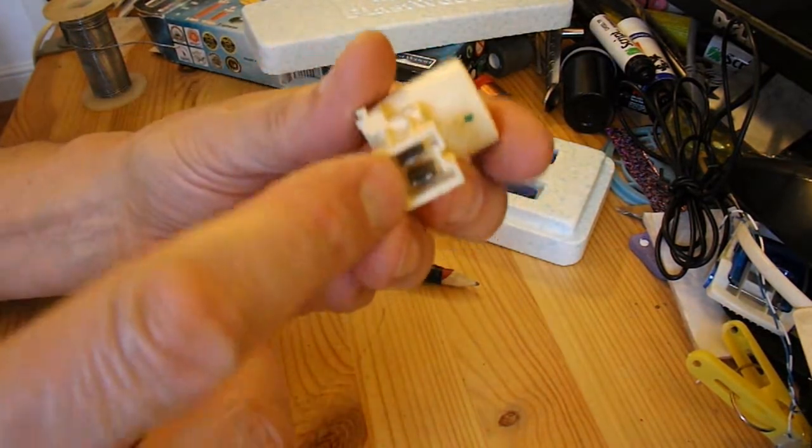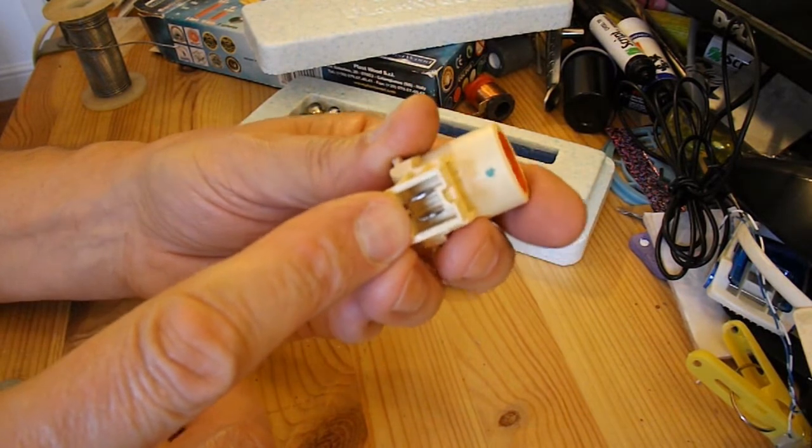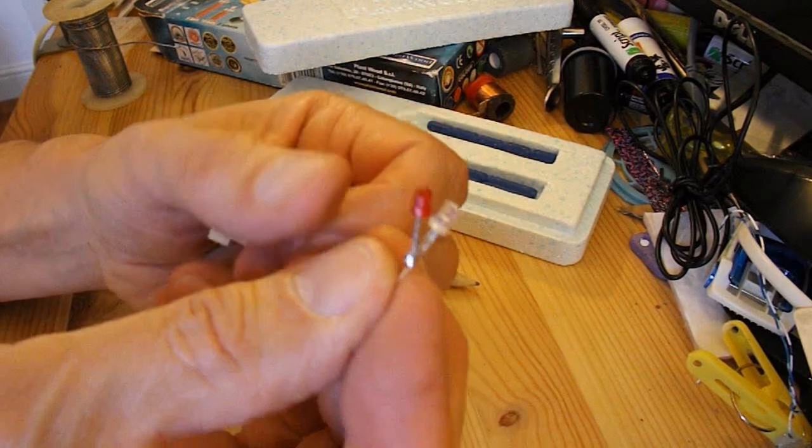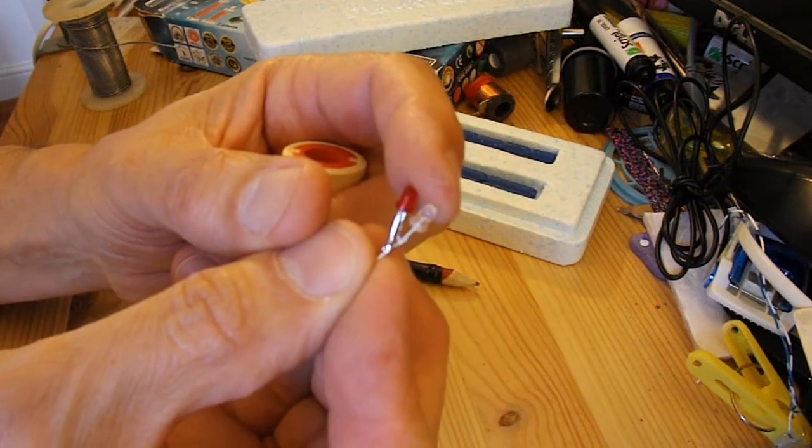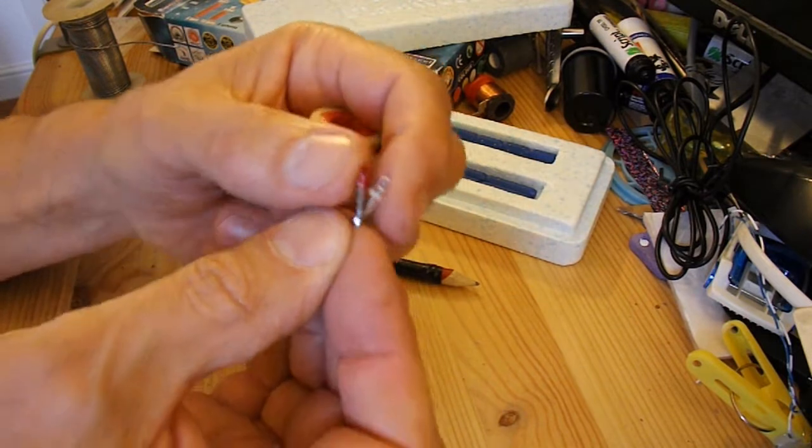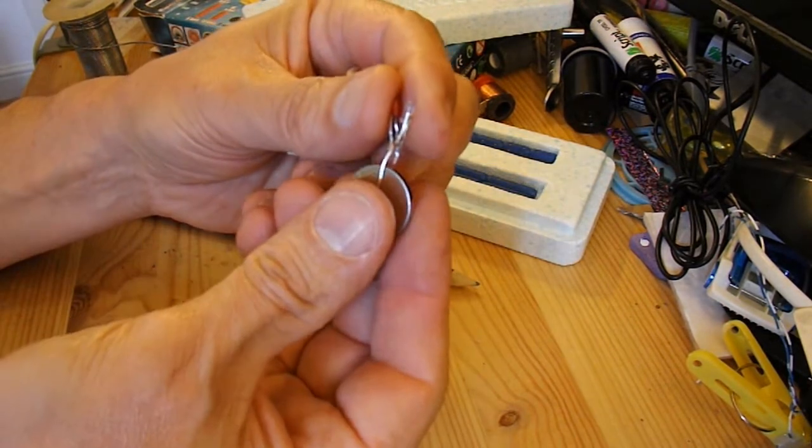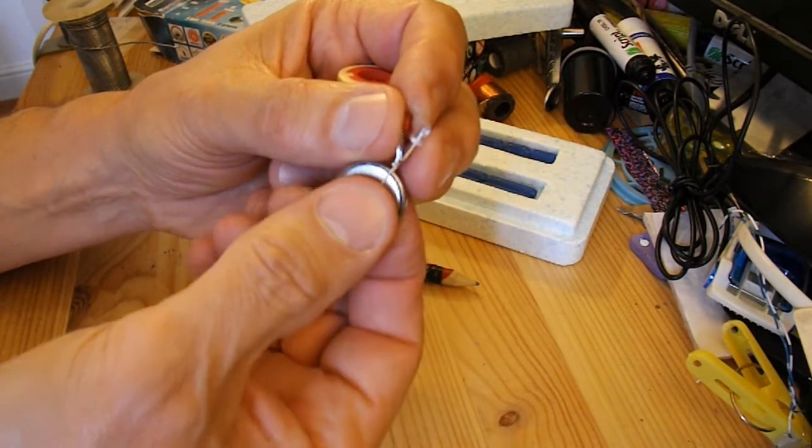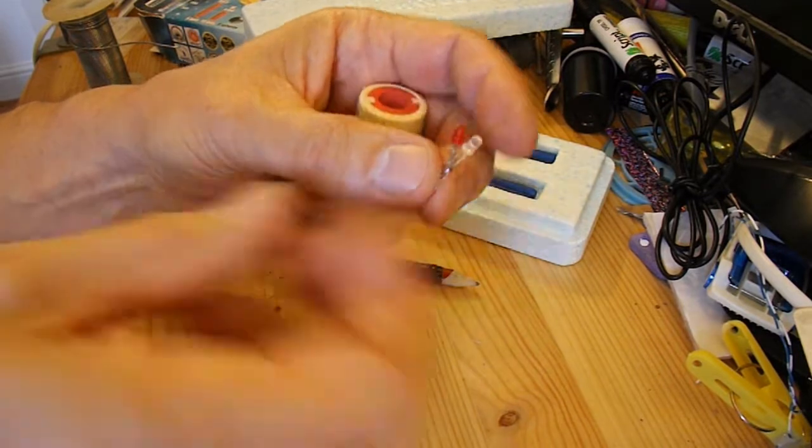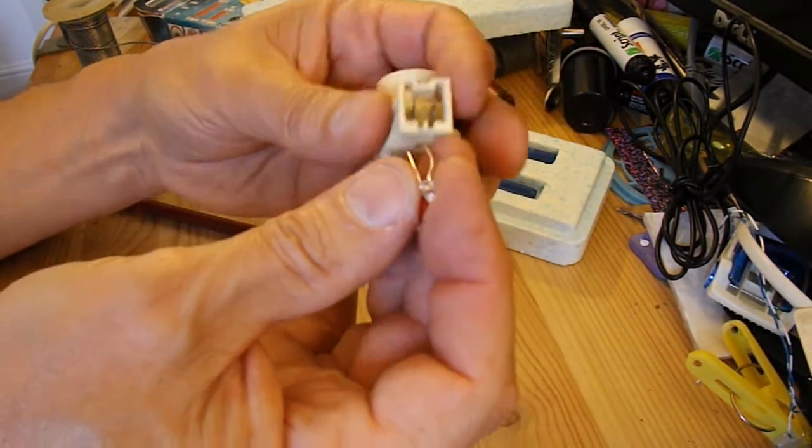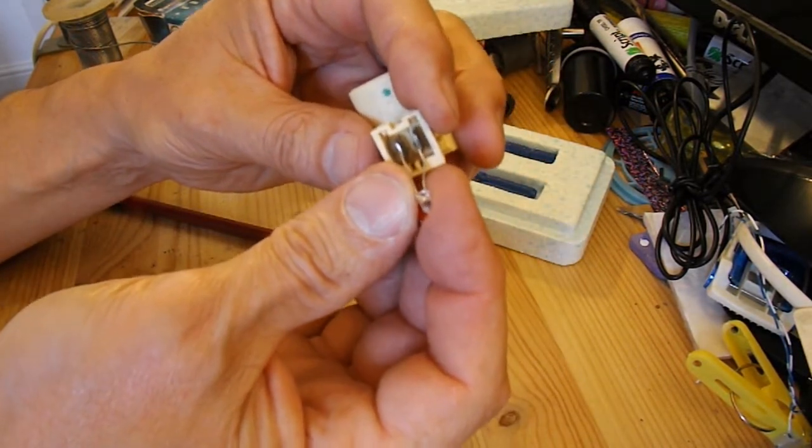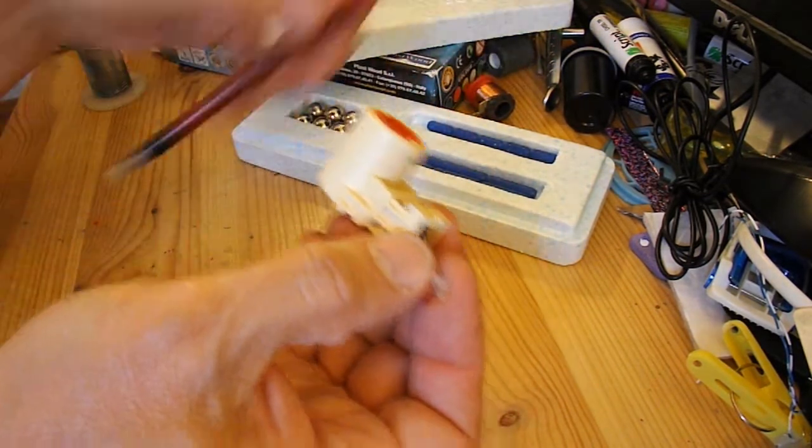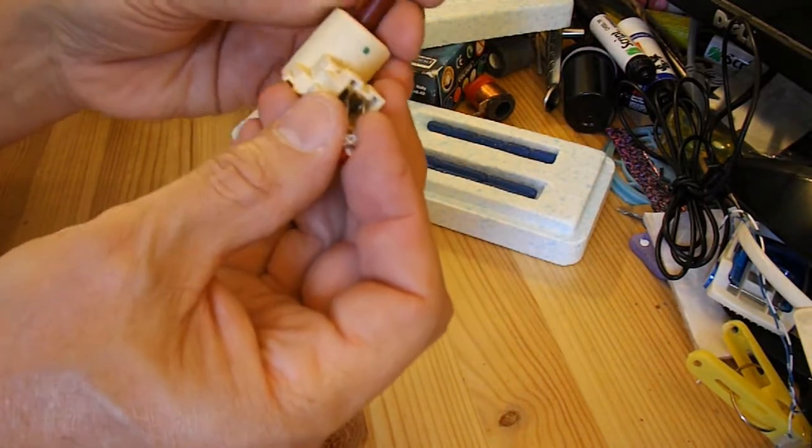That's the two terminals for the ends of the coil on the solenoid. What I've done is I've just soldered two LEDs together, one red one and one green one, so that when the current goes one way, the green one comes on, and when the current goes the other way, the red one comes on. So that should make it a little bit easier to see what's going on. I'll solder them straight on the end of those terminals.